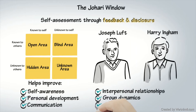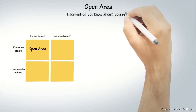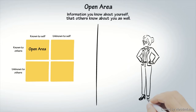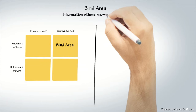The upper left quadrant is called the open area. This represents information you know about yourself that others know about you as well. Robin is strong-willed, extroverted, and outspoken — these traits are known to her and to those around her. The upper right quadrant is called the blind area. This area represents information others know about you but you don't know about yourself.